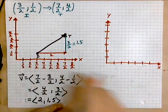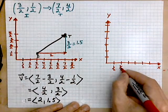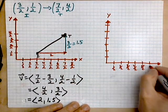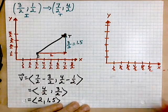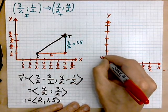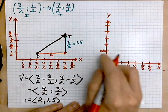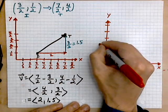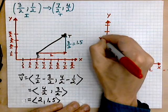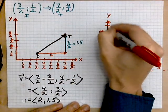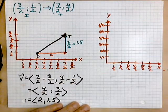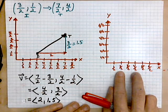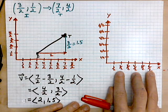Let's label the axes as before in terms of halves. So we'll call this a half, this would be two halves, our three halves, our four halves, five halves, six halves. The same thing applies to the vertical axis — so we'll call this a half, two halves, three halves, four halves, five halves, and six halves. Don't forget that two halves is just another way of saying the number one, four halves means two, six halves means three, and so on.